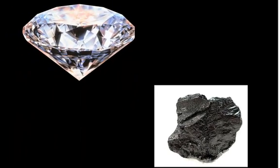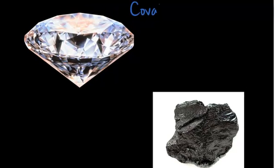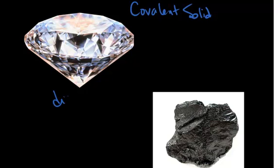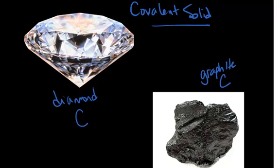This is an example of a covalent solid. This is diamond, which is an allotrope of carbon, and this is graphite, which is another allotrope of carbon. They're both covalent solids, or network solids, and that tells me that they are held together by a network of covalent bonds.